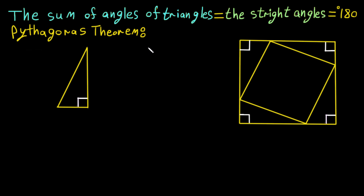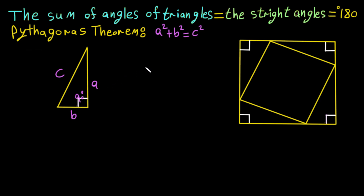Let's learn about Pythagoras' theorem. Pythagoras' theorem states that a² + b² = c² for a right triangle. In this video, we will understand and explain why a² + b² = c², and we will see how this works visually.